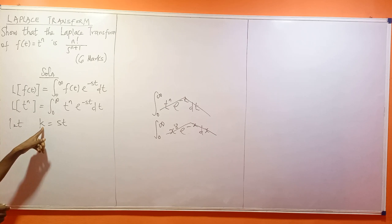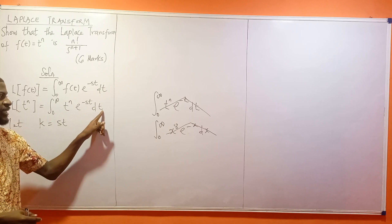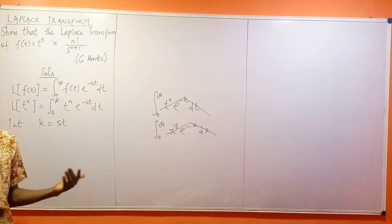By substituting k = st, I need to express both t and dt in terms of k, since I'm changing variables.